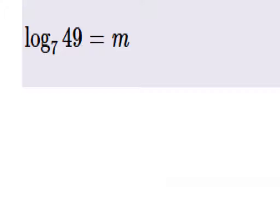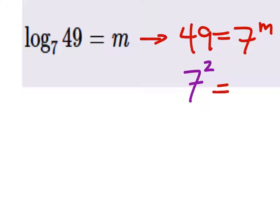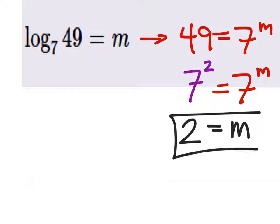So if we change this into exponential form, we're going to have 49 equals 7 to the power of m. And 49 is 7 to the power of 2, which should equal 7 to the power of m. And if it does, we can just get rid of the bases and we find that 2 equals m would be our answer.